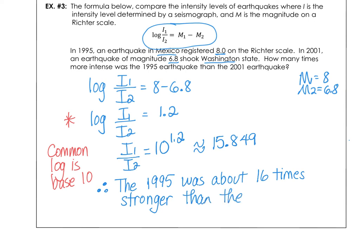So we're using the Richter scale formula and the intensity ratio to calculate how much stronger one earthquake was than the other.